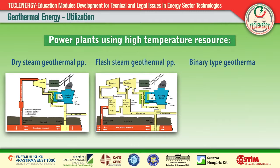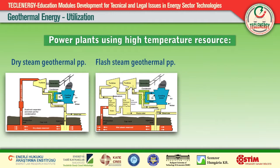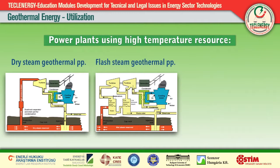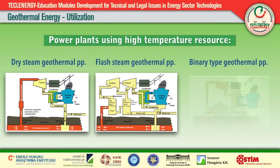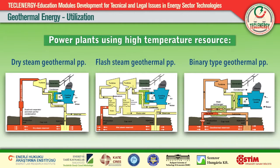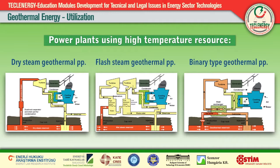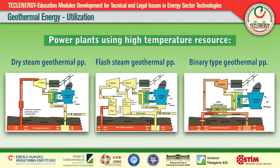Flash steam power plants use water-dominated wet steam reservoirs in which most of the high-temperature geothermal resource is provided by pressurized water. Single or multiple flash steam plants produce energy by evaporating depressurized liquid water into steam. The typical size of flash steam power plants varies between 5 and 100 megawatts. Binary power plants convert geothermal heat from low-enthalpy water-dominated hot water reservoirs into electricity. The typical size of binary power plants varies between 0.5 and 10 megawatts.